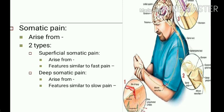Deep somatic pain arises from muscles, joints, bones, and viscera. Its features are similar to slow pain — it is dull and poorly localized, and it has a radiating property.